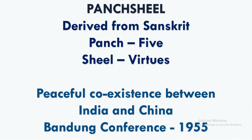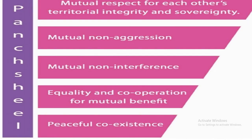Now let's see what Panchsheel says about — it has five virtues. The first virtue is mutual respect for each other's territorial integrity and sovereignty. Every nation has its own border and we should not cross it; we have to respect territorial integrity and sovereignty. The second virtue is mutual non-aggression — we should not occupy others' territory. You know the problem between India and Pakistan with the border; this kind of aggression should not happen.